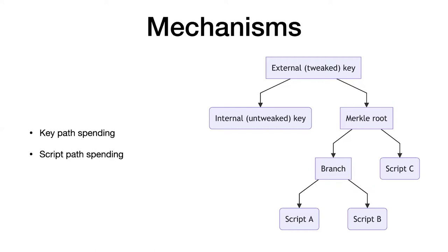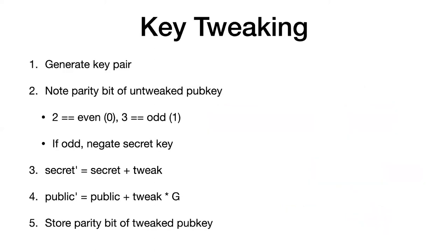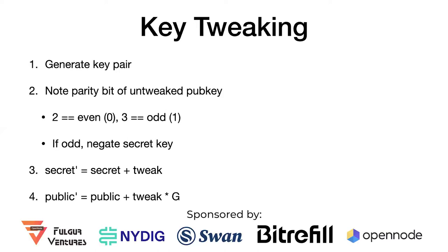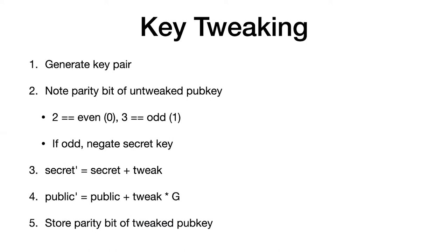First, I want to talk about how you construct outputs, because to spend an output you first have to create it. Let's start with the assumption that you want to generate a typical key pair, where you have a private key — a big integer of 32 bytes — and a compressed public key of 33 bytes, where the first byte is the parity byte: 0x02 indicates the y-coordinate is even, and 0x03 that it's odd. The key you're starting with is essentially the internal public key — the untweaked one, before you add the Merkle tree onto it.